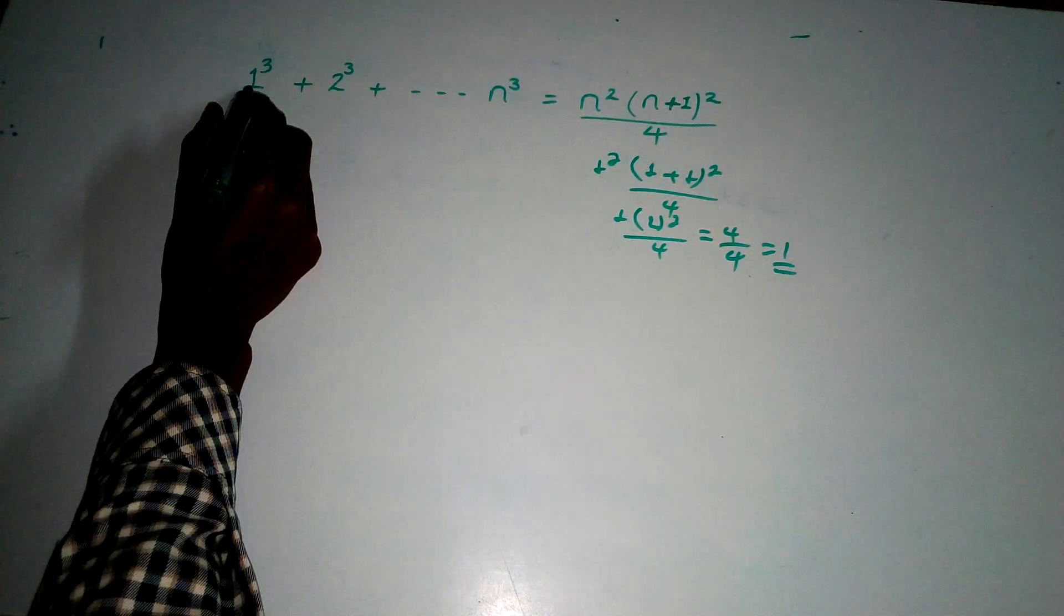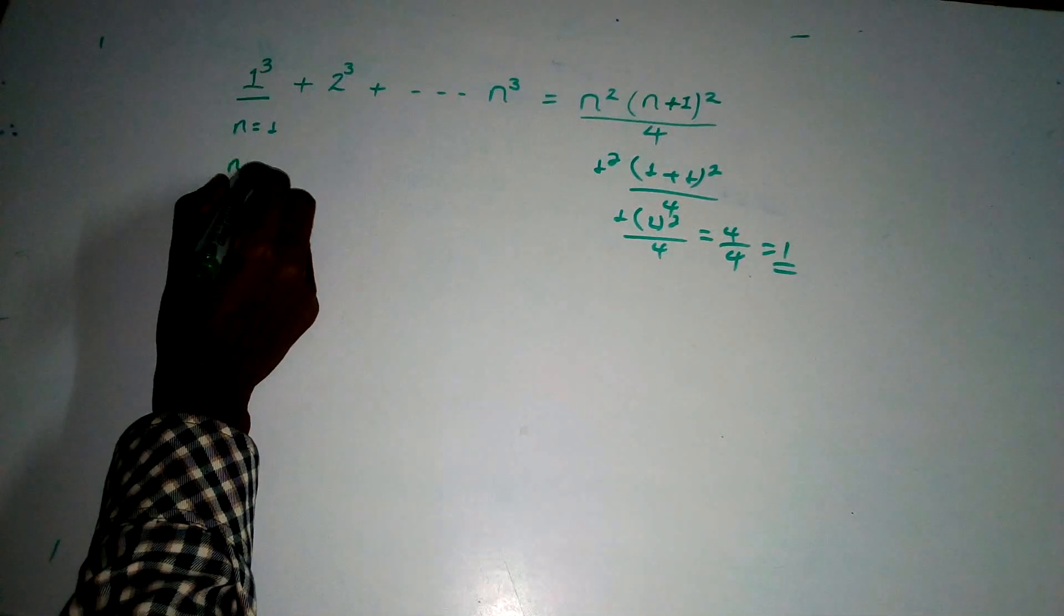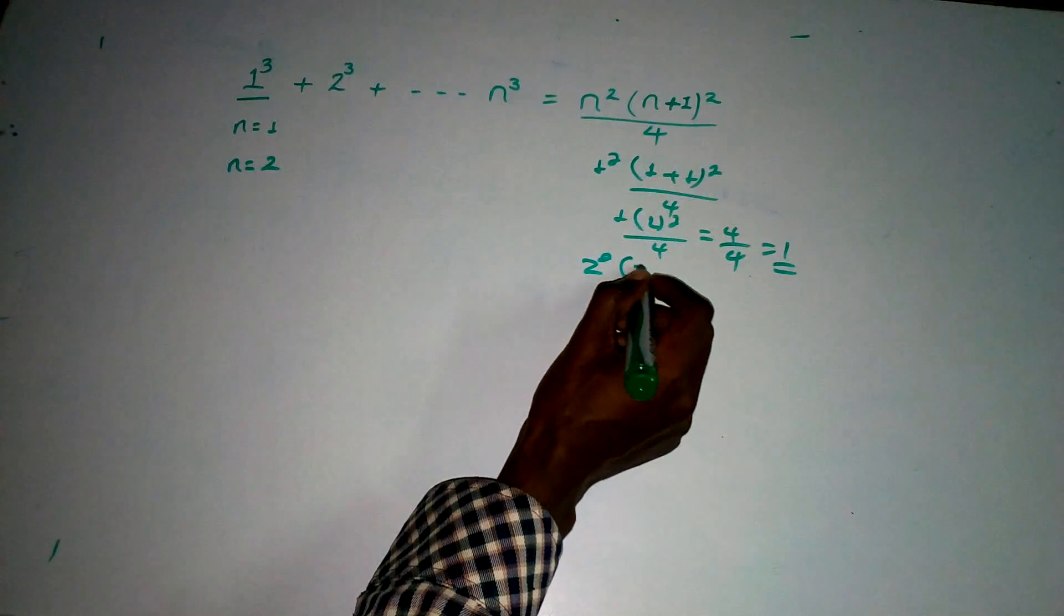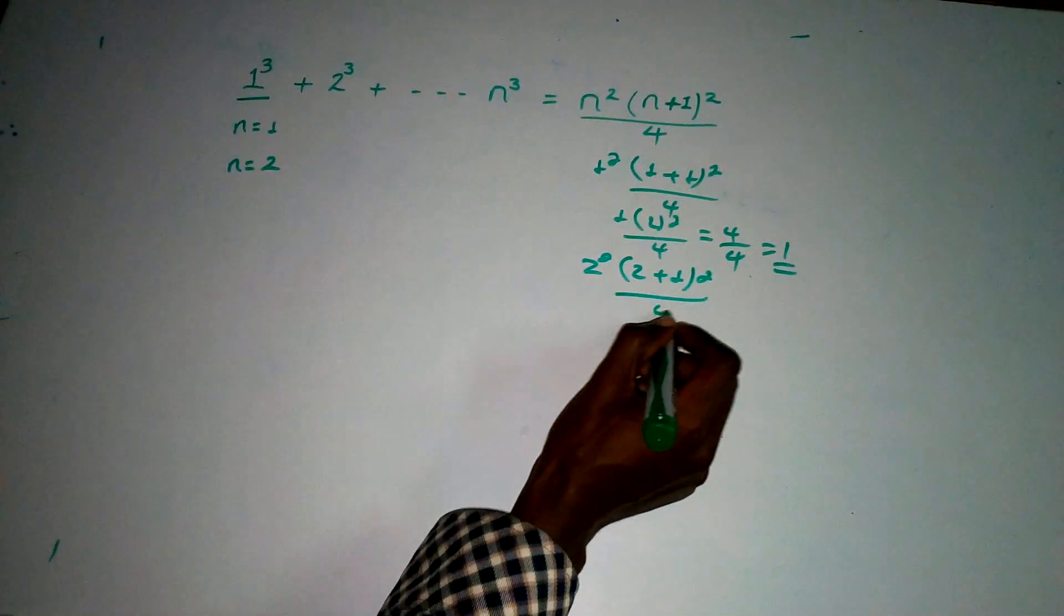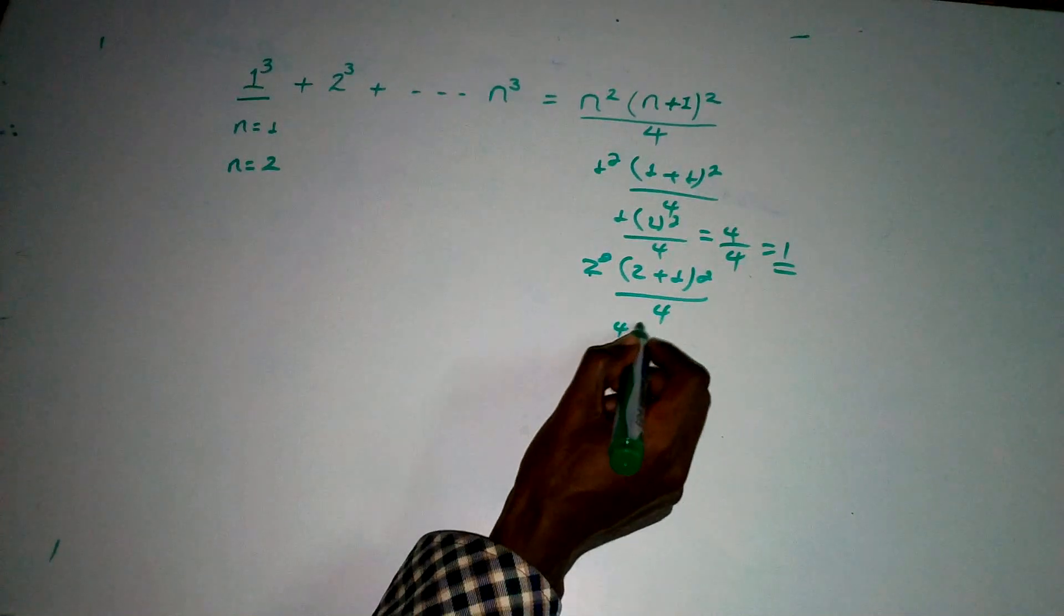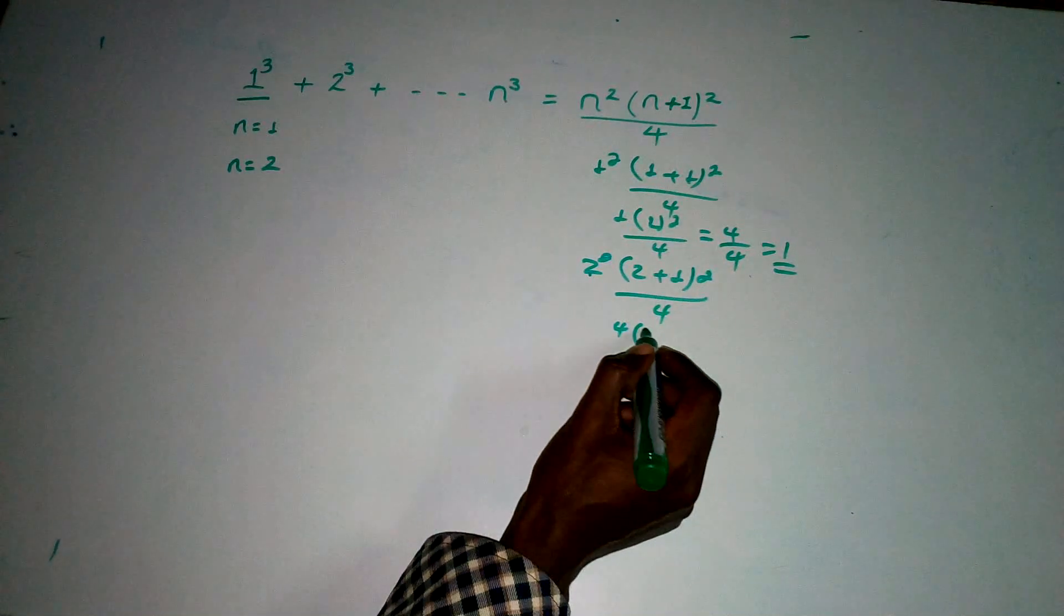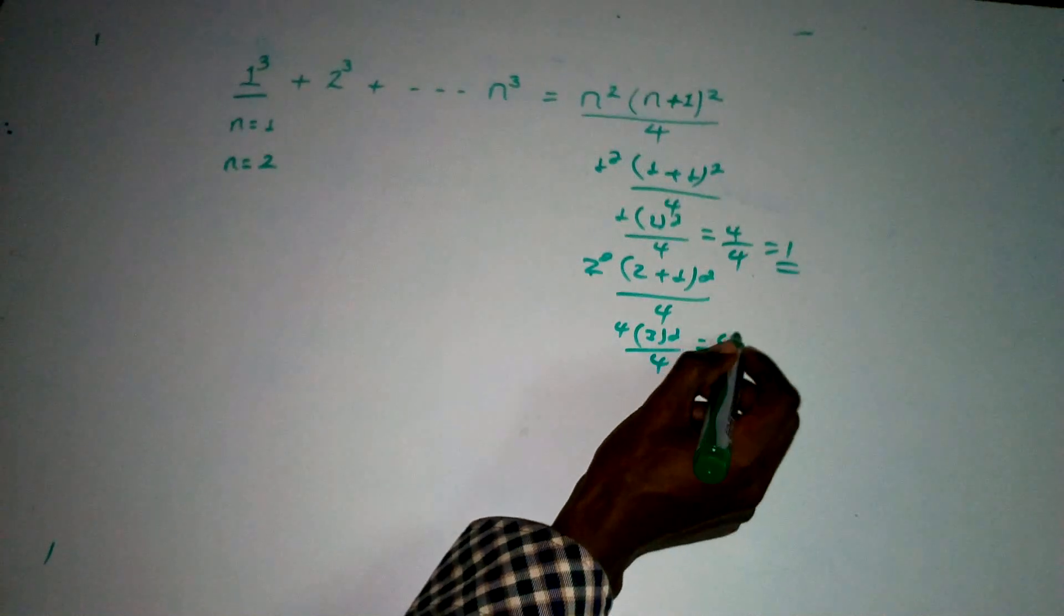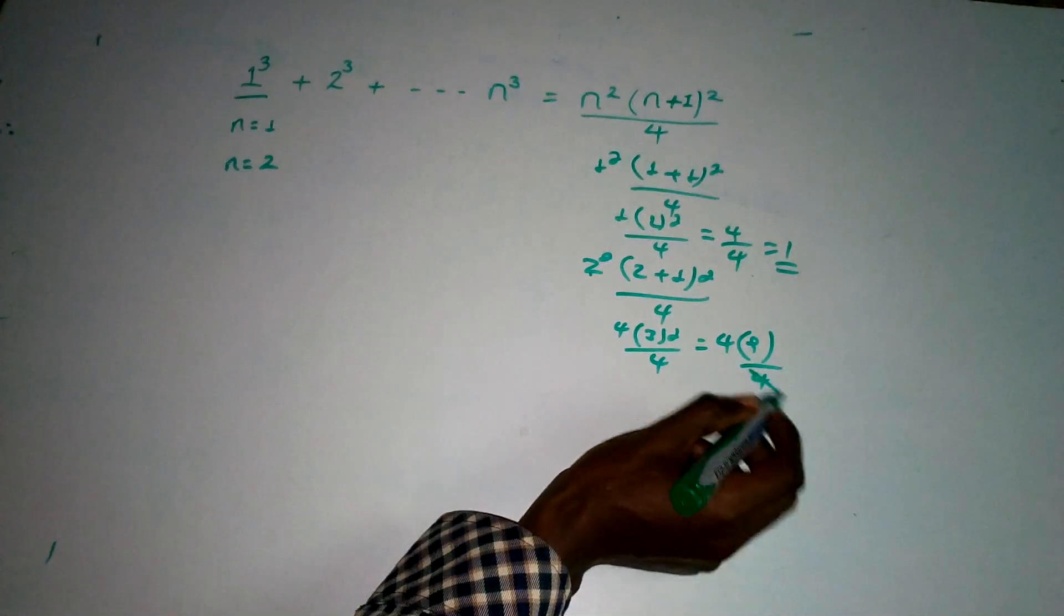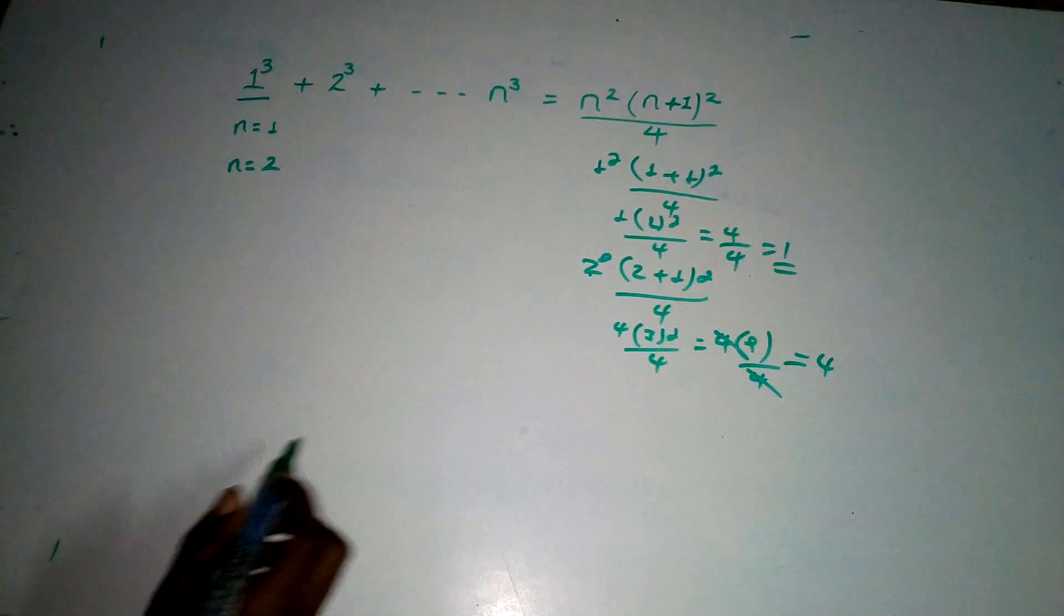Now let's check n is equal to 2. For n is equal to 2, we get 2 square into 2 plus 1 the whole square over 4. That's 4 in the bracket 2 plus 1 is 3, 3 square over 4. That means 4 into 9 over 4, so the 4s cancel. This is verified.